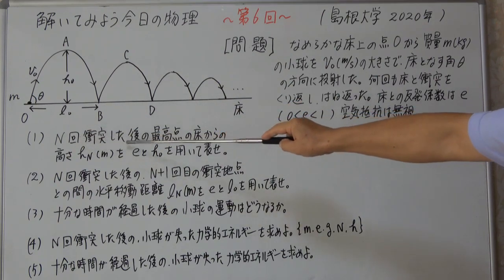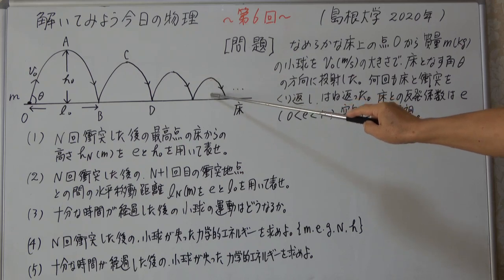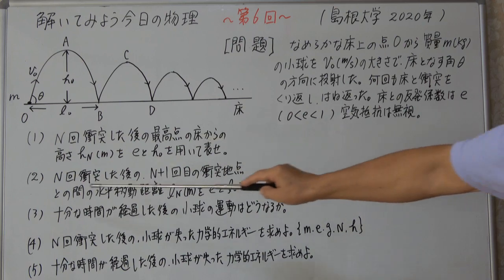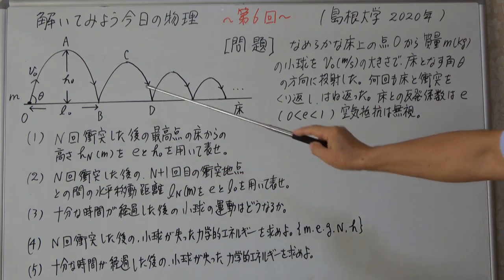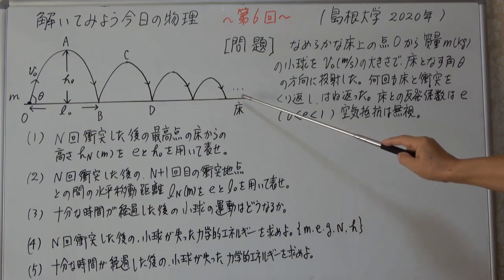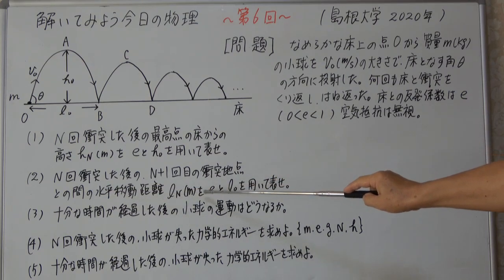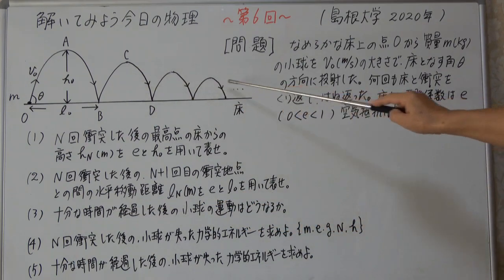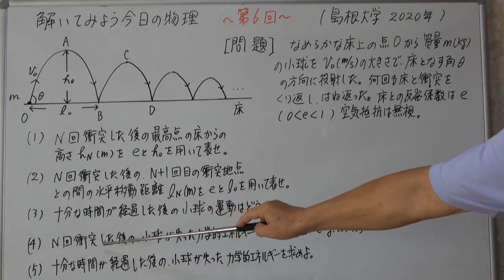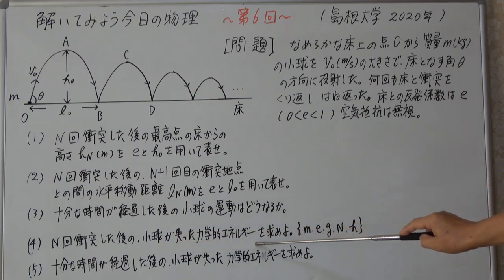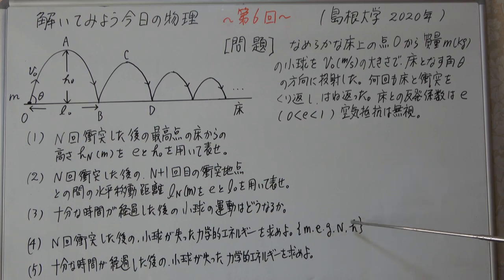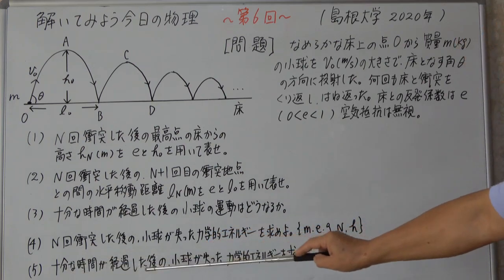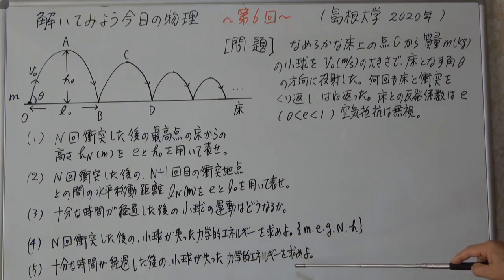Eは0から1の間、空気抵抗を無視します。最高点の高さが最初はH0、水平移動距離がL0です。問題は小問5問です。まず1番、N回衝突した後の最高点の床からの高さを求める。4番はN回衝突後の小球が失った力学的エネルギー、5番は十分な時間が経過した後の力学的エネルギー損失を求めます。まず自分の力で解いてみましょう。